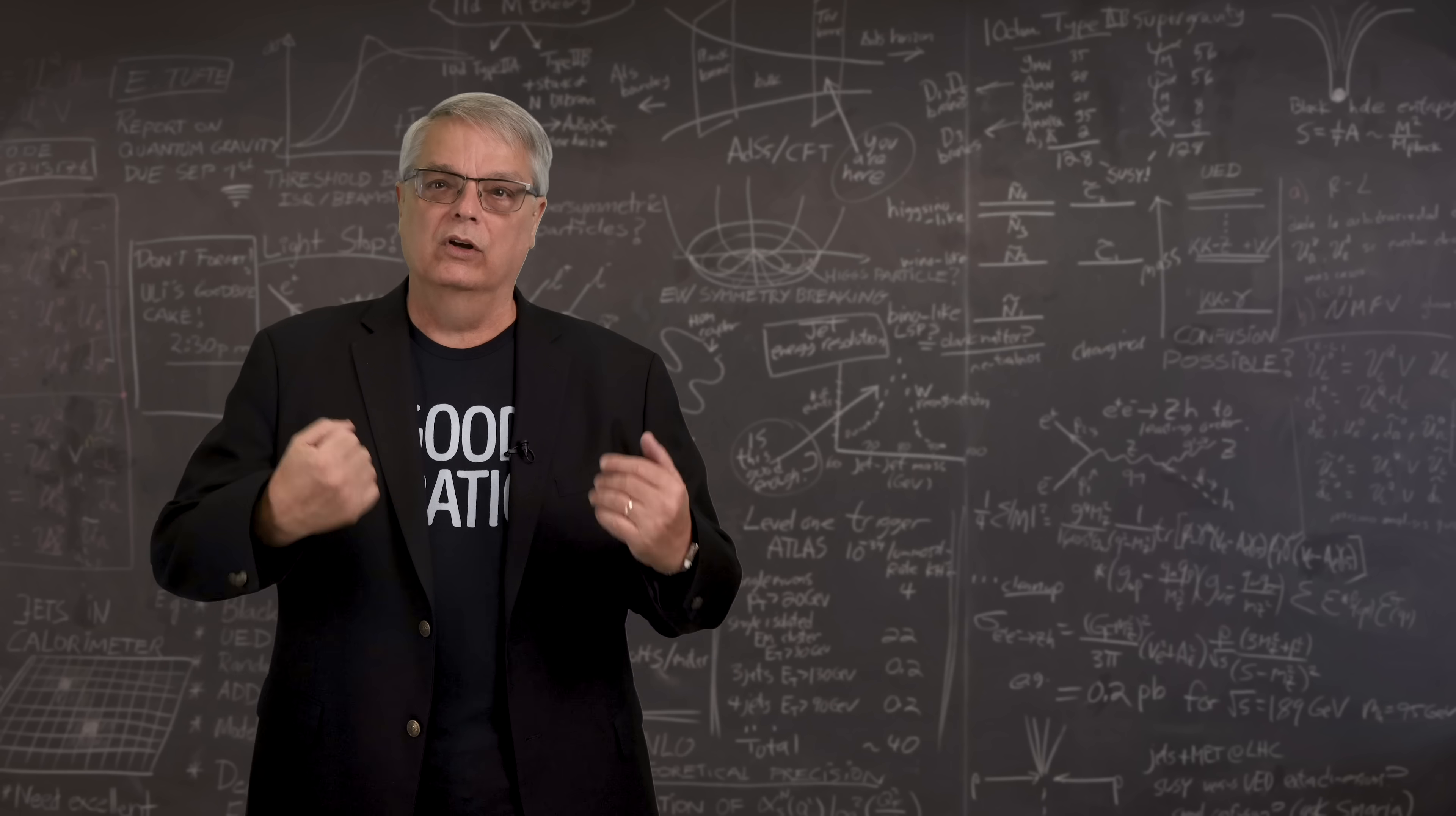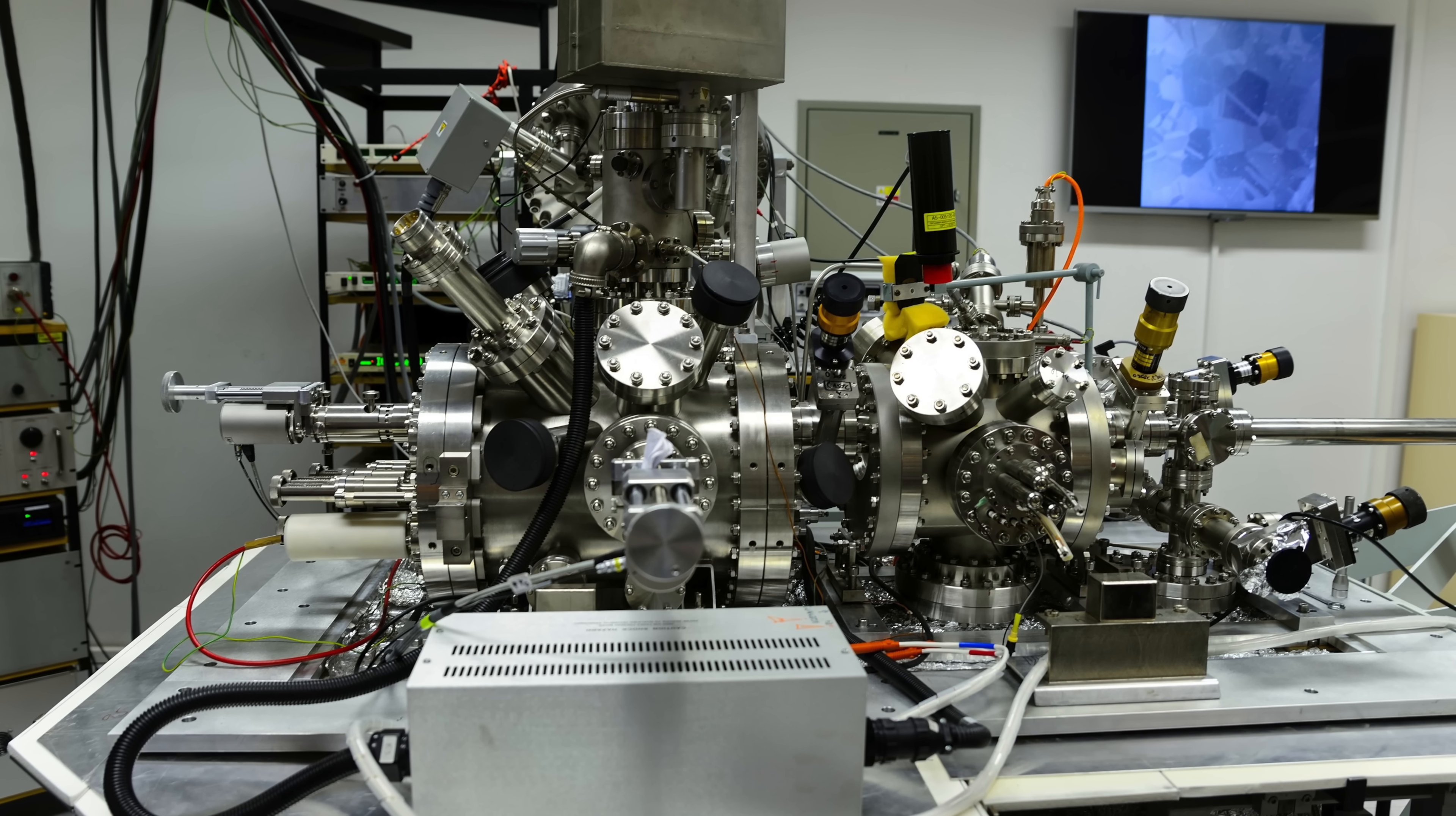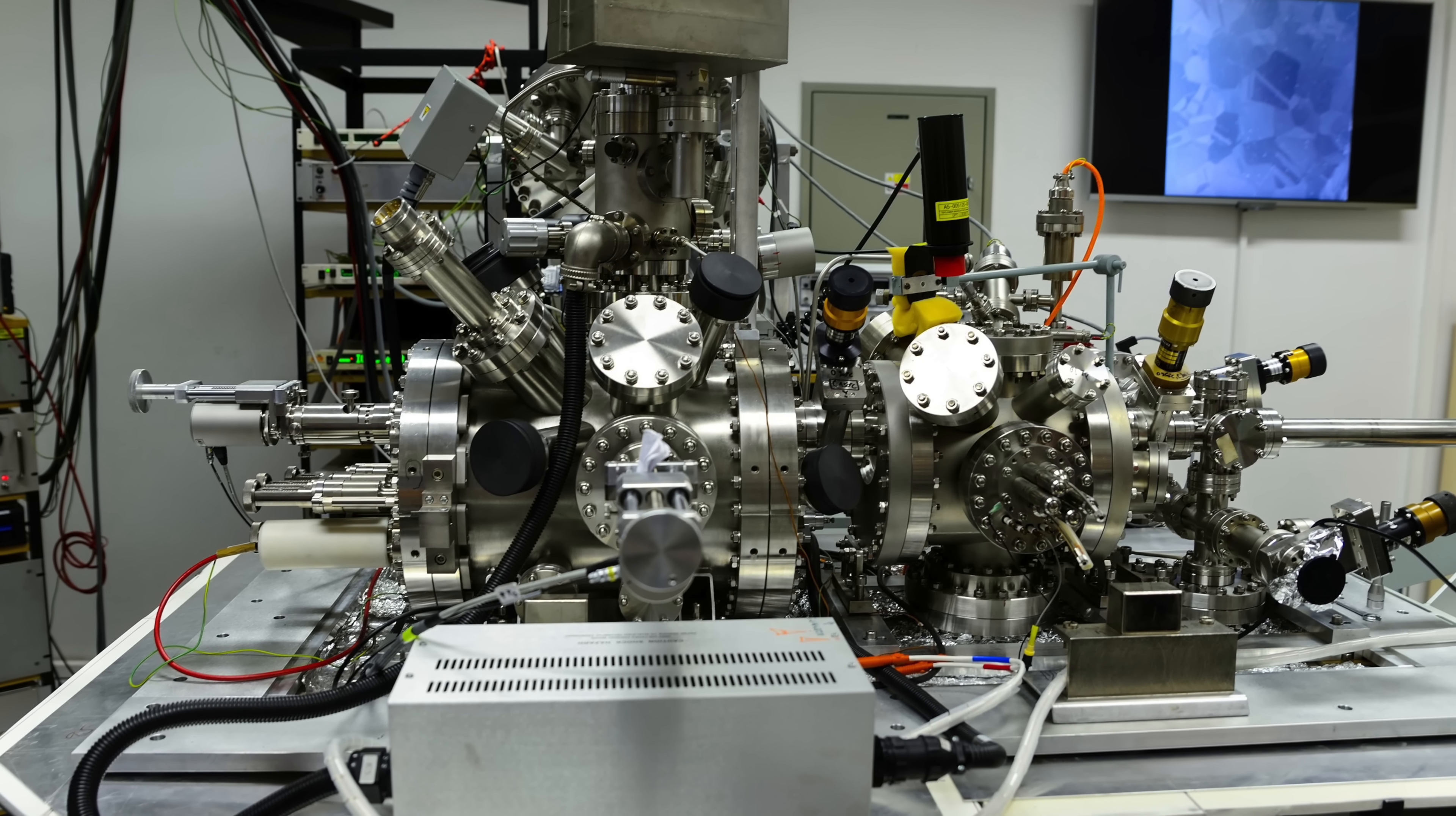Of course, when we look, we're not seeing things on a truly tiny scale. Our eyes can't see things much smaller than a tenth of a millimeter. And even using the most powerful scanning electron microscopes, we can only resolve things about the size of atoms.